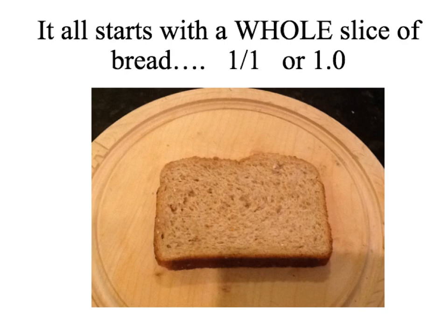We're going to start with one whole, and that is your slice of bread. If you have one whole, you have 1 over 1 — that's your fraction. And written as a decimal, it is 1.0. That means one whole, and when you see that decimal, you say 'and,' and the zero means nothing more.